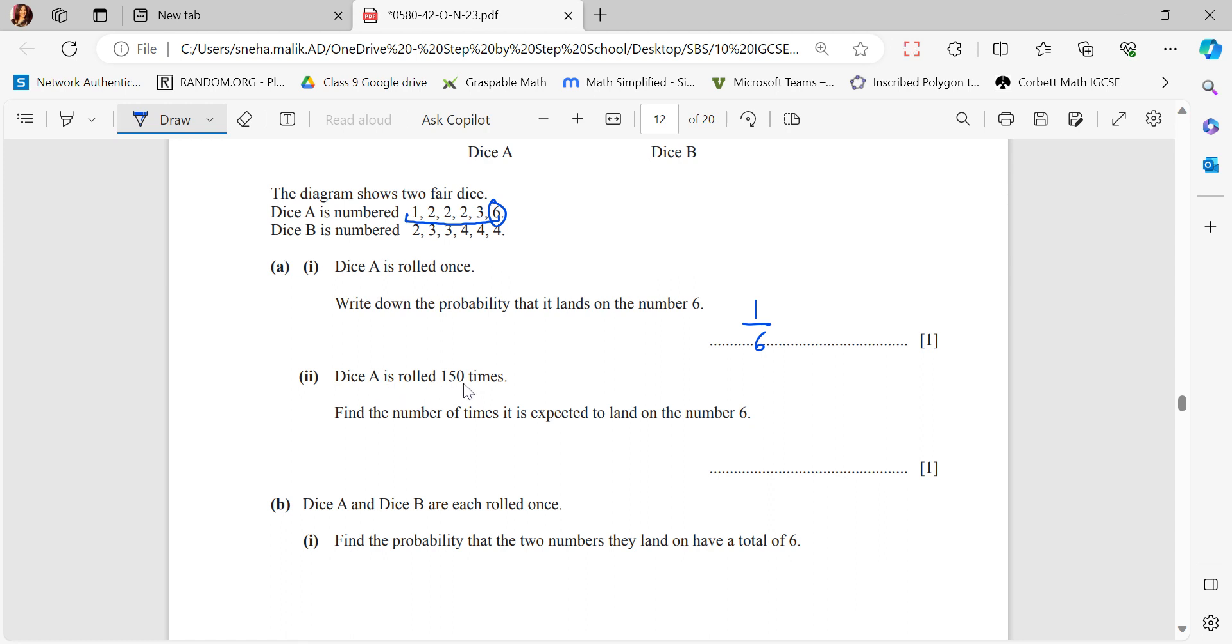Dice A is rolled 150 times. If one time the probability is 1 sixth, find the number of times it is expected to land on the number 6. I will do 1 sixth of the number of times I am rolling it, and this number comes out to be 25.